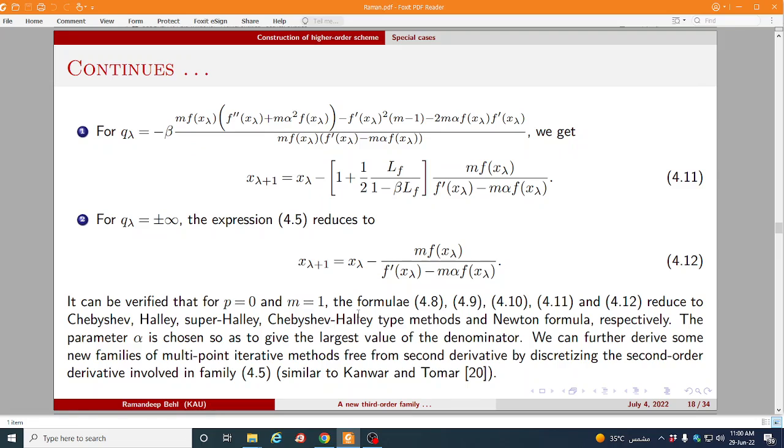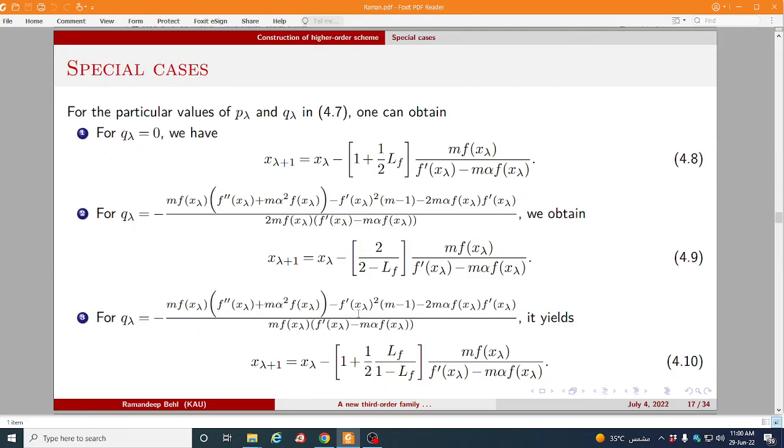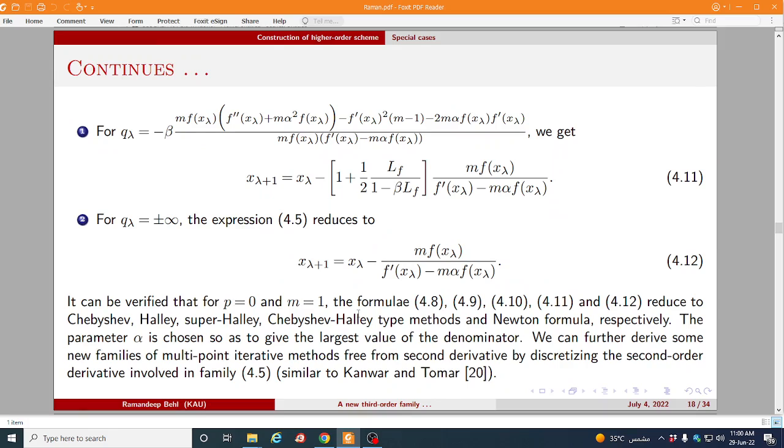In all the new method from 4.8 to 4.12, if we choose alpha is equal to 0 and m is equal to 1, then the formula 4.8, 4.9, 4.10, 4.11 and 4.12 will turn as respectively Chebyshev, Halley's, Super Halley's, Chebyshev and Newton formulas.